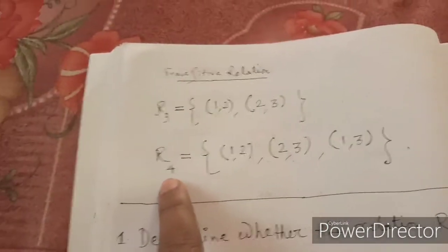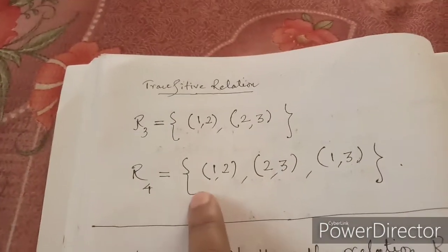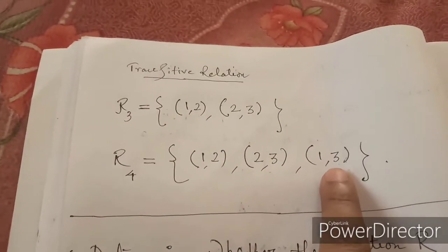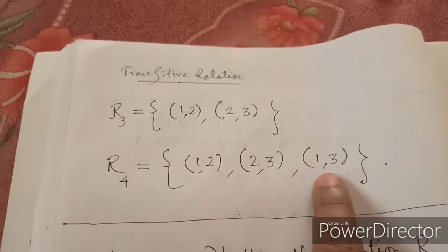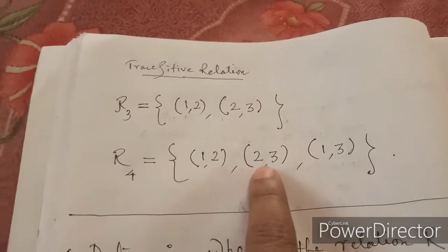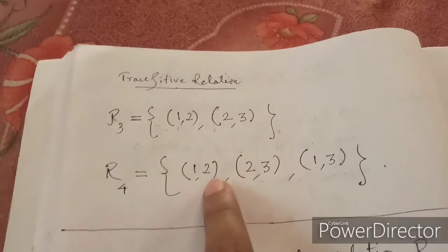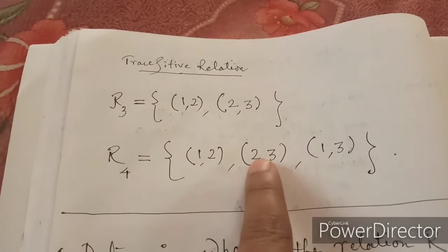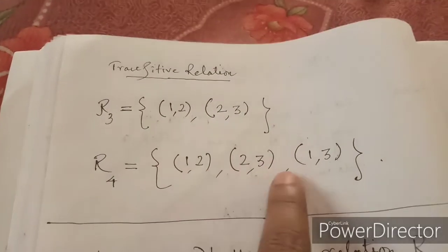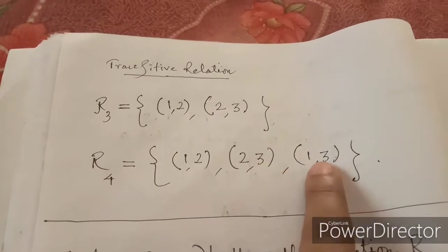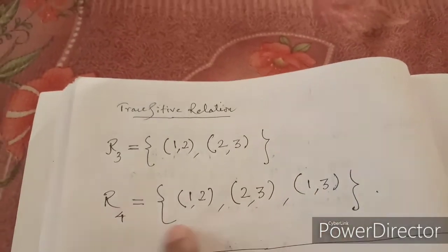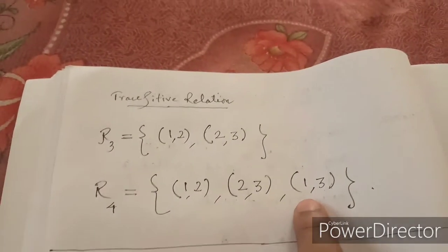Now consider R4 = {(1,2), (2,3), (1,3)}. This relation is transitive because (1,2) belongs to R4 and (2,3) belongs to R4, and the two 2s are common, so (1,3) belongs to R4. So R4 is clearly transitive.